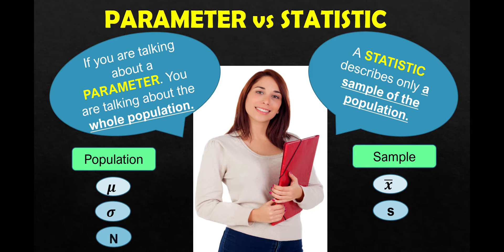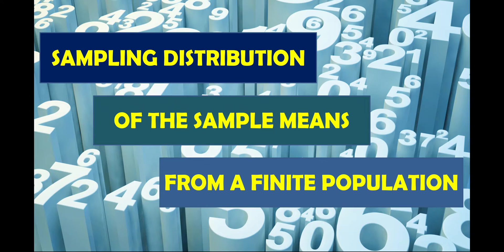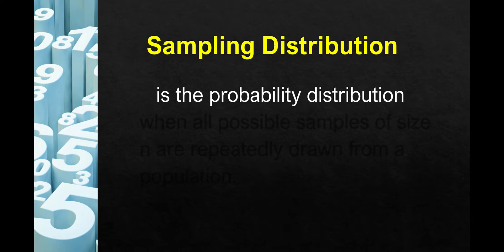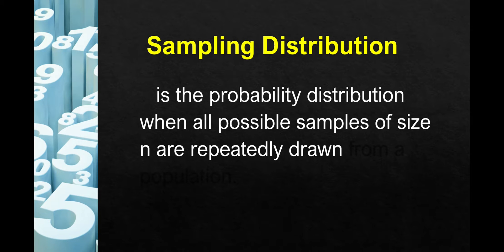For population size, we use capital N, meaning the number in the population, and for sample size we use small n, meaning the number in the sample. Now that parameter and statistic are clear, we move on to the sampling distribution of the sample means from a finite population. The sampling distribution is the probability distribution when all possible samples of size n are repeatedly drawn from a population.